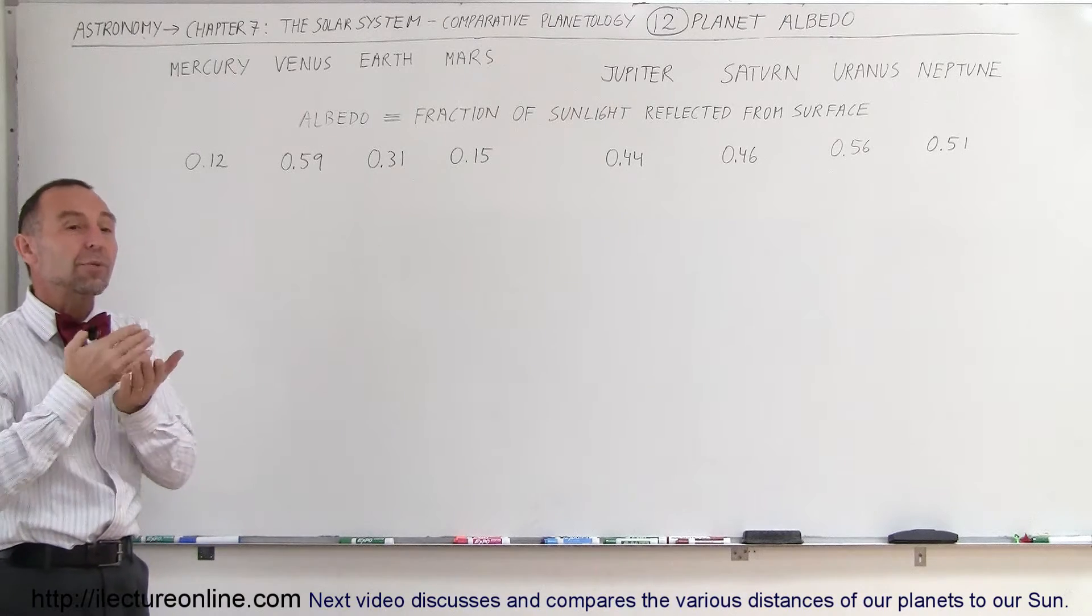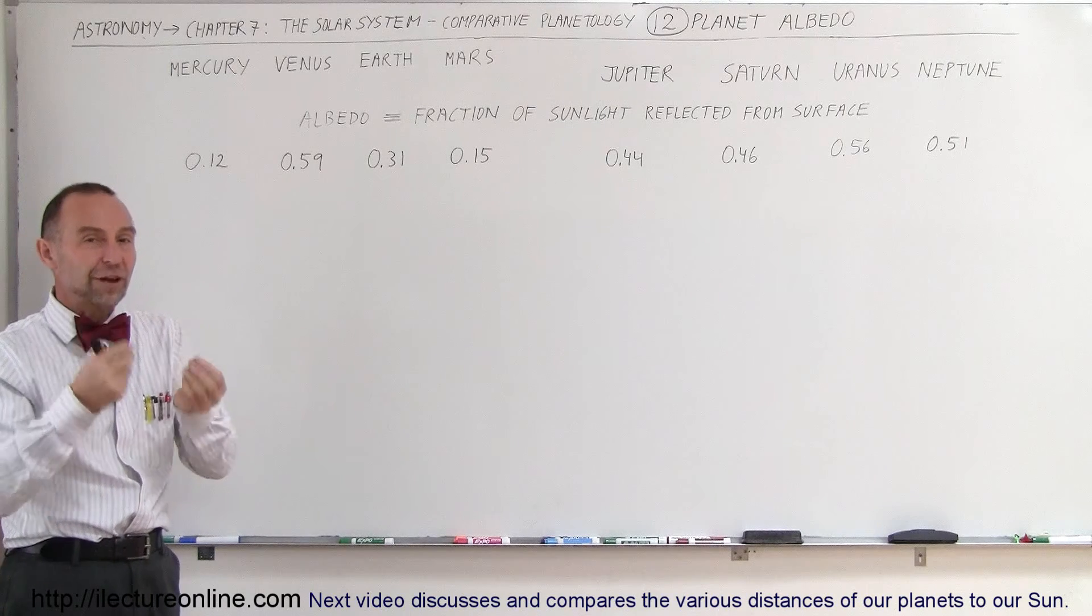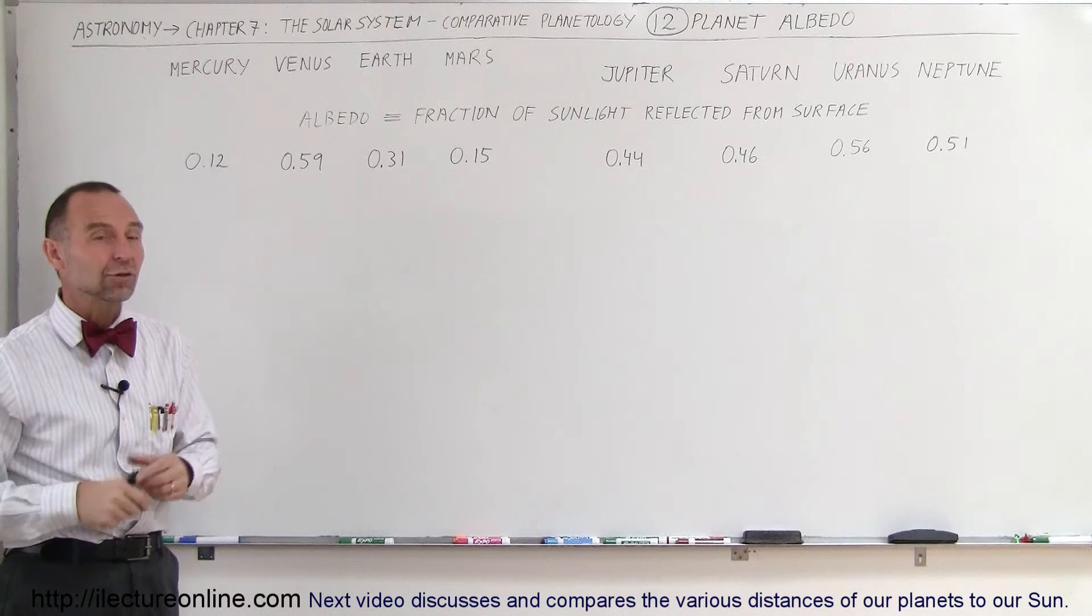So for each of the planets, the number represents the portion or the fraction of sunlight that the planet receives that's reflected back into space.